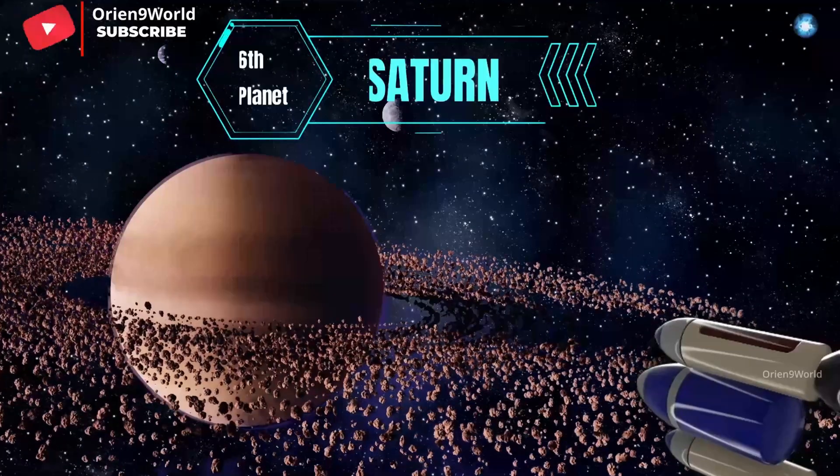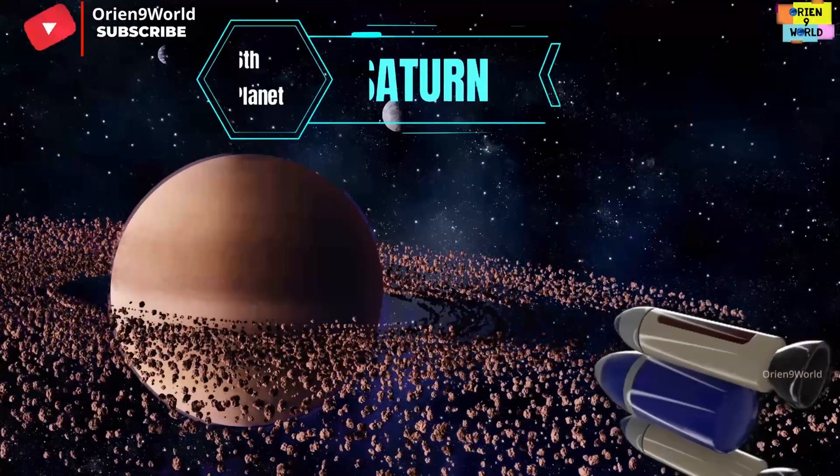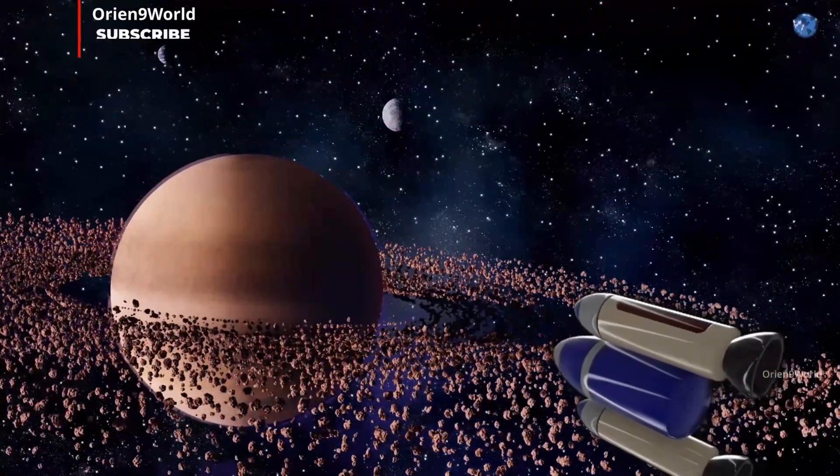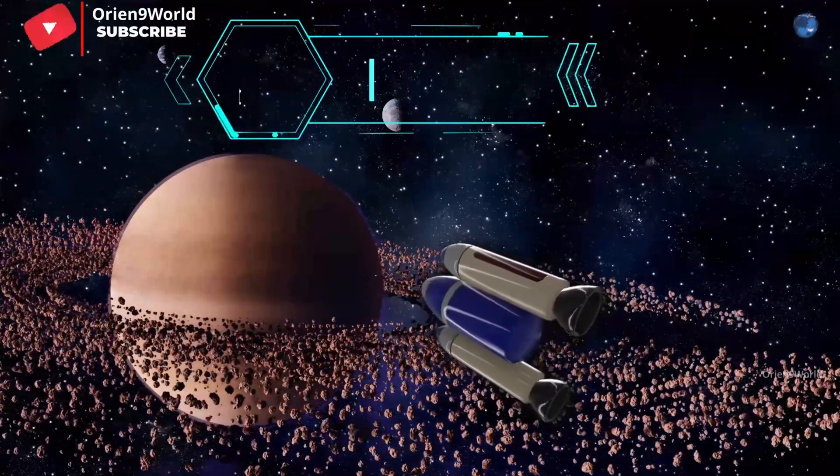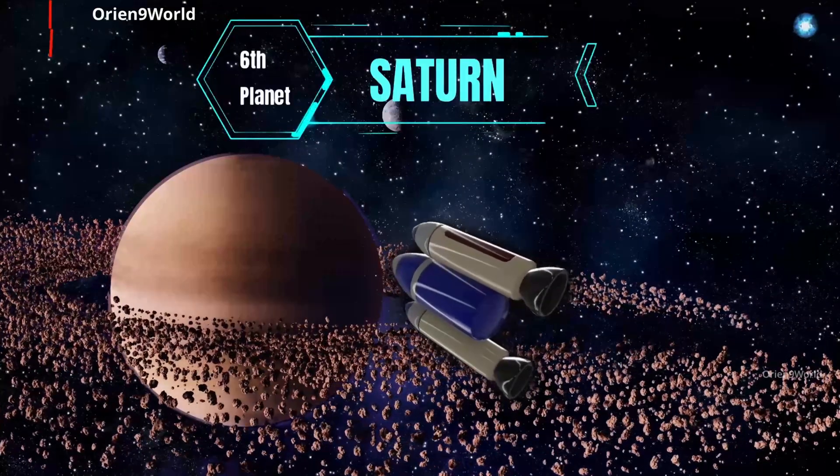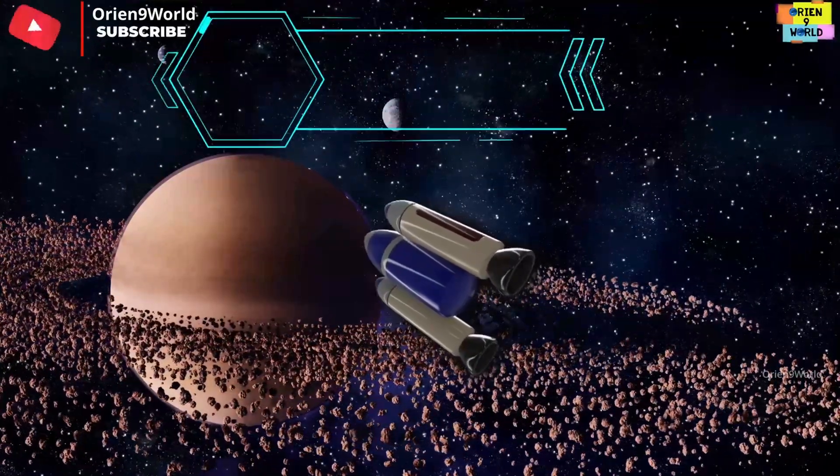My name is Saturn, I am brown in color, I'm the sixth planet from the sun. My outer rings are extremely thin, they're made of dust and icy chunks.